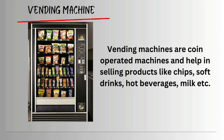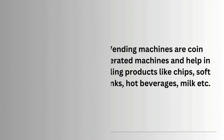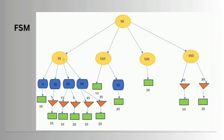Now moving on to the finite state machine model. This is the FSM for the vending machine. S0 is the default state, and we have S5, S10, S20, and S50 as the next states. These states also represent the rupee denominations we are going to use in this project.